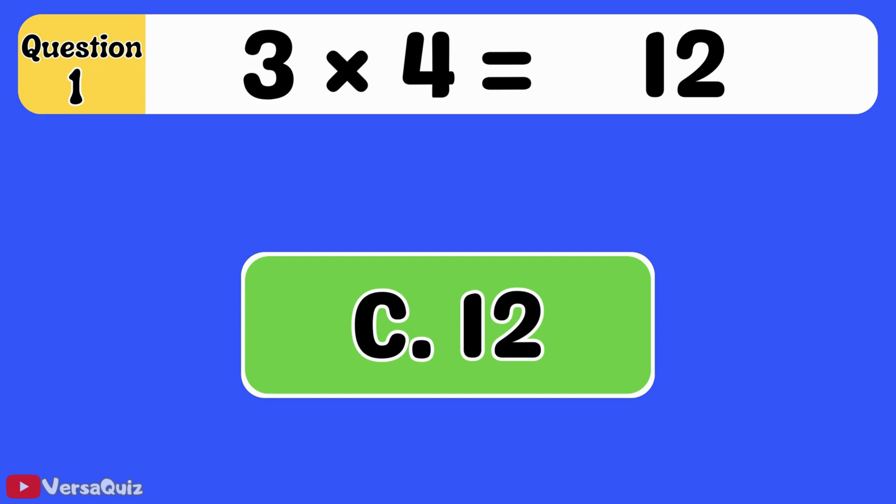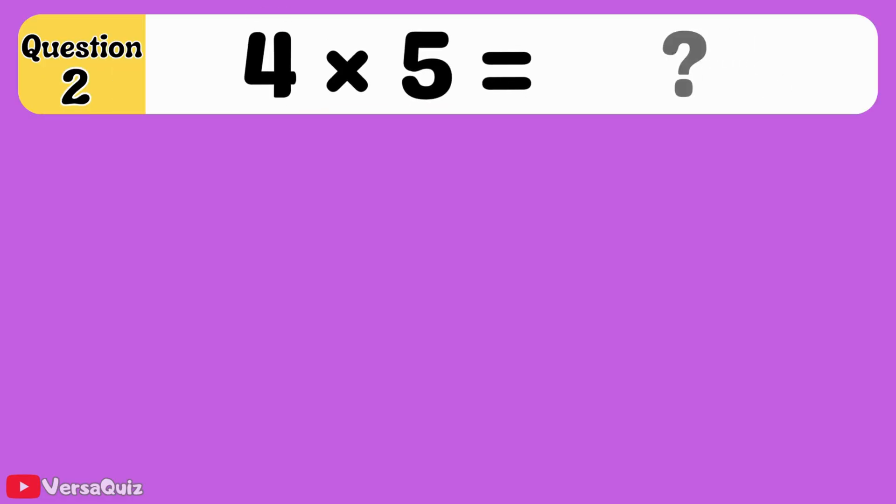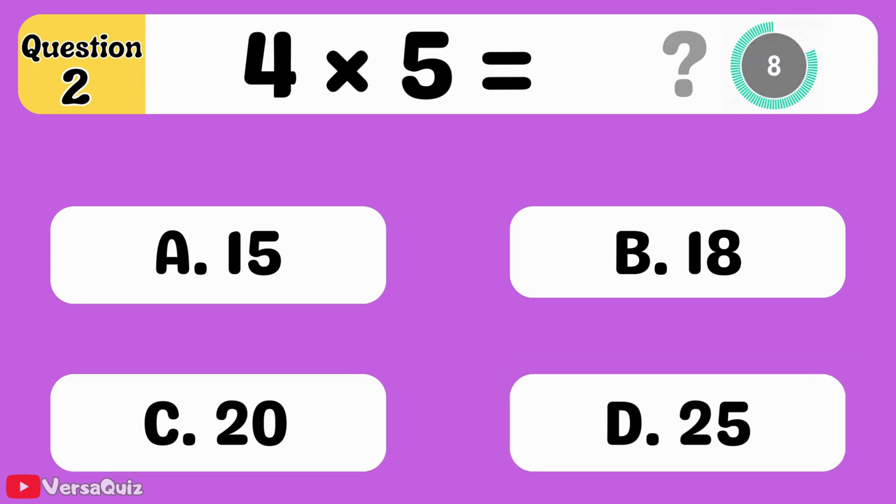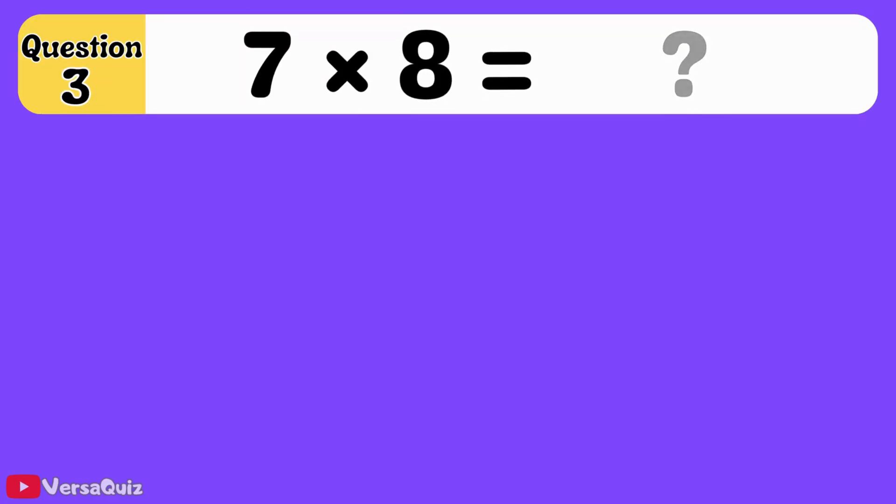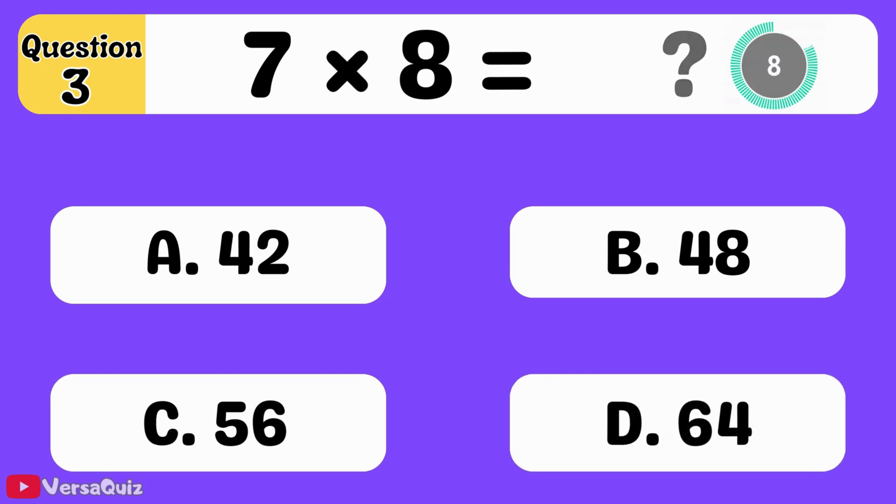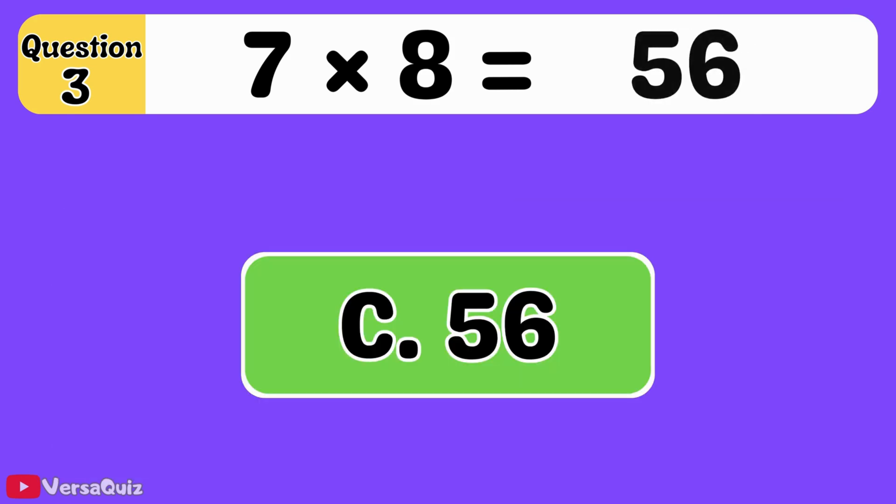12. 3 times 4 equals 12. Next question. 4 times 5 is equal to... 20. 4 times 5 equals 20. Next question. What is 7 times 8? 56. 7 times 8 equals 56.